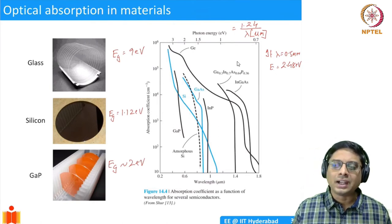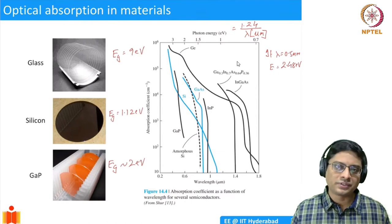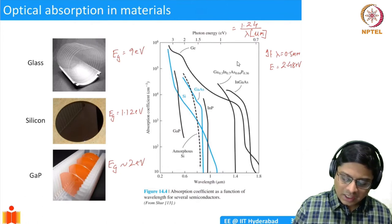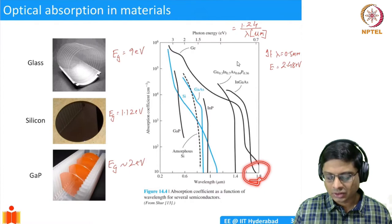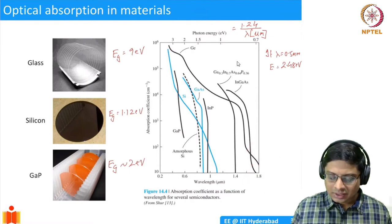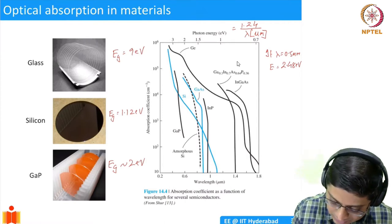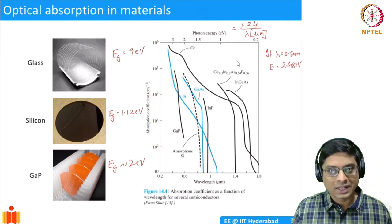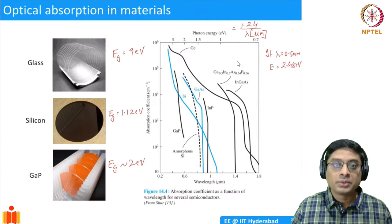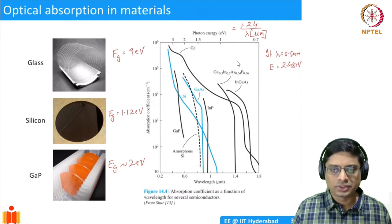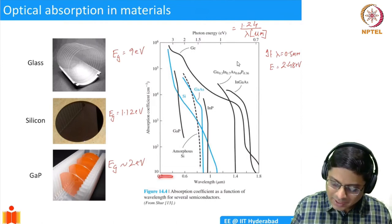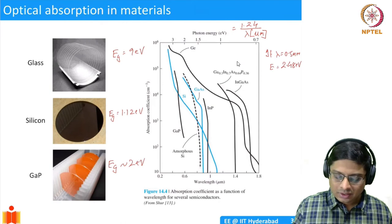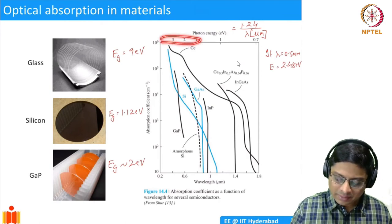The plot of absorption coefficient for various semiconductors shows that all materials have low absorption at long wavelengths. Silicon (shown in blue) has increasing absorption on a logarithmic scale as wavelength decreases below its band gap. Equivalently, absorption increases when the photon energy exceeds the band gap.